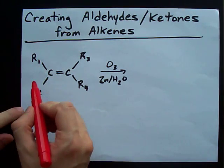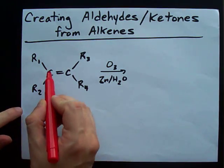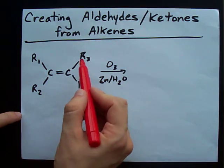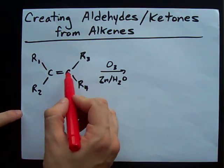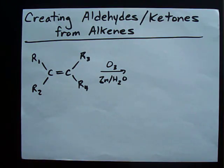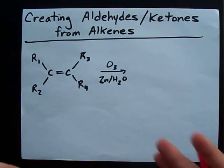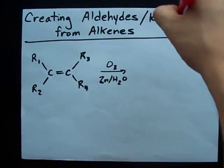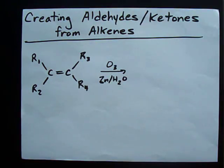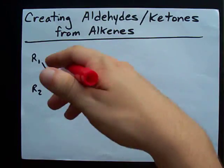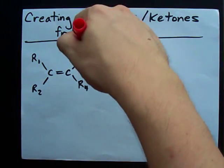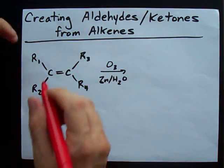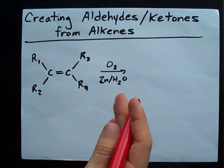Here I've got R1 and R2 attached to the first carbon, and R3 and R4 attached to the second carbon. Those can be whatever you want — long chains, a benzene ring somewhere, or just hydrogens.